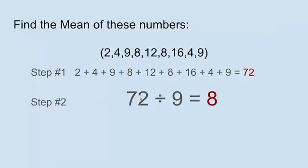Find the mean of these numbers. Well, to find the mean, that's the average. You have to add up all of the numbers in the sample set and then divide by the number of samples. So in this case, we added up all the numbers. There's 72. And there are nine numbers in the number set. So if you divide 72 by 9, you get 8.